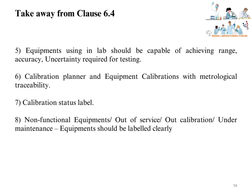Equipment used in the lab should be capable of achieving the range, accuracy, and uncertainty required for testing. The lab should have a calibration planner and equipment calibrations with metrological traceability. Calibration status labels should be available on all applicable equipment. Non-functional, out-of-service, out-of-calibration, or under-maintenance equipment should be clearly labeled to avoid misuse.